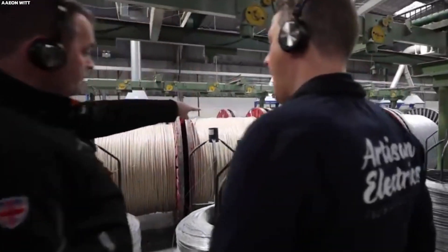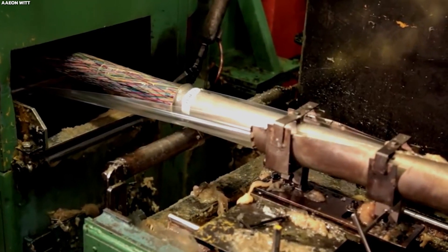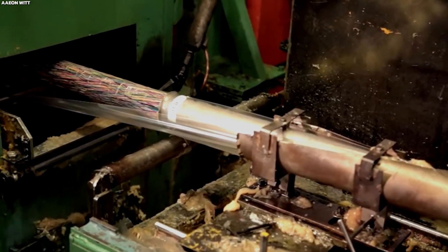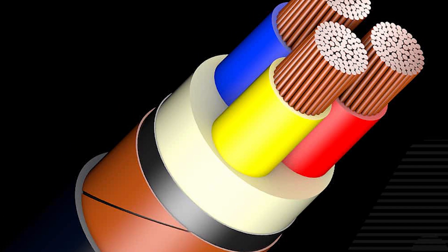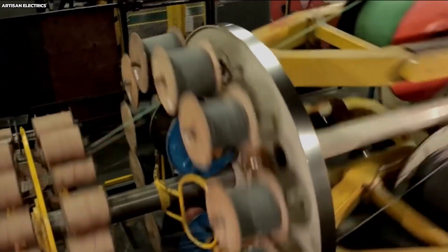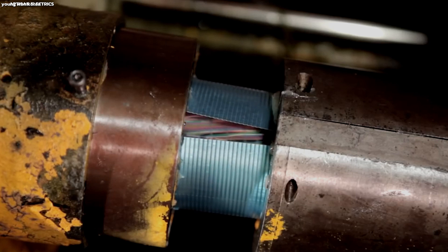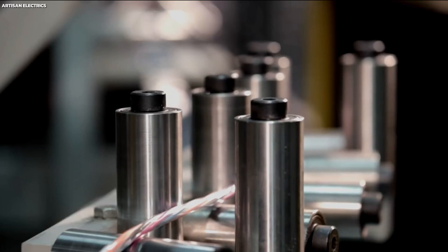In the cable manufacturing process, individual copper wires are twisted or bundled together to form cables, designed to meet specific requirements for electrical and communication applications. This bundling enhances the mechanical strength of the cables and provides redundancy — if one wire fails, others in the cable can maintain the connection. The twisting of the wires also helps to reduce electromagnetic interference and increases the flexibility of the cable, making it easier to install and route through buildings and infrastructure.